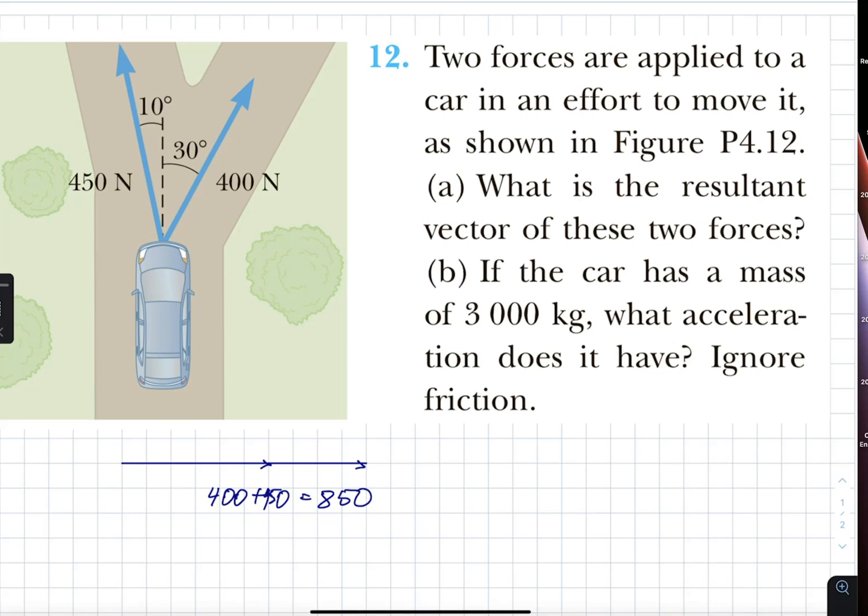Had they been collinear but opposite in directions, for example, if I have 450 to the right and 400 to the left, then we would have subtracted, and our net force would have been 50 newtons to the right. In this case, however, our forces are not collinear at all.